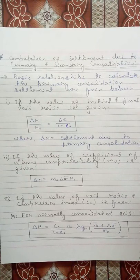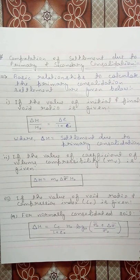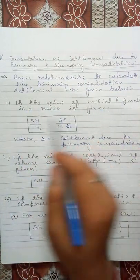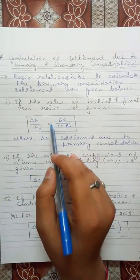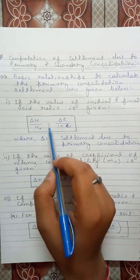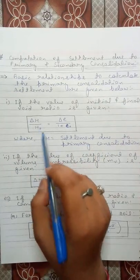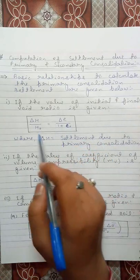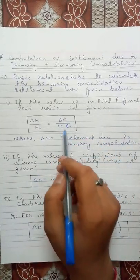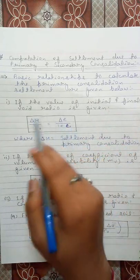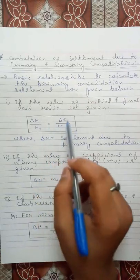In this video we will learn about the various relationships that can be used for the computation of settlement due to primary and secondary consolidation. The formula we use generally depends on the values given in the problem. First, if the value of initial and final void ratio is given, we use: δH/H₀ = δe/(1+e₀), where δH is settlement due to primary consolidation, H₀ is the thickness of the layer, δe is the change in void ratio, and e₀ is the initial void ratio.